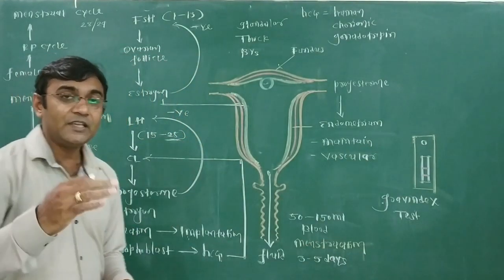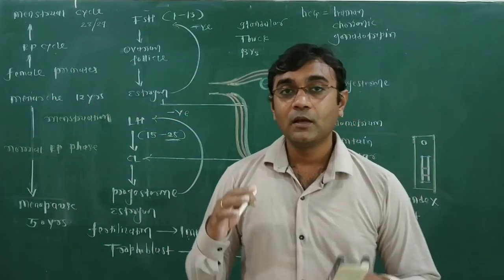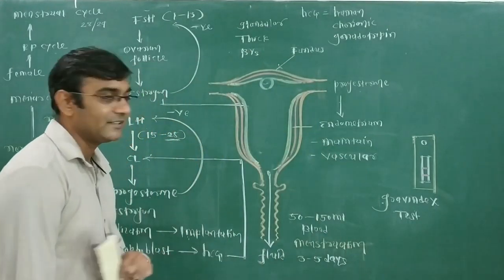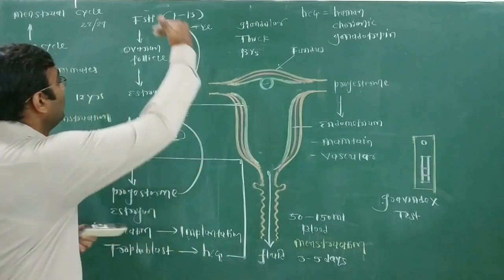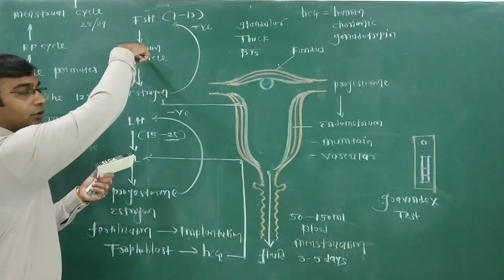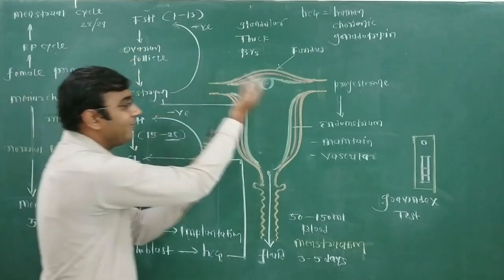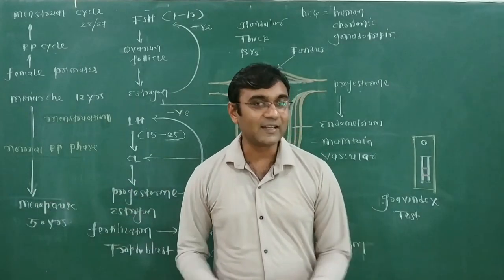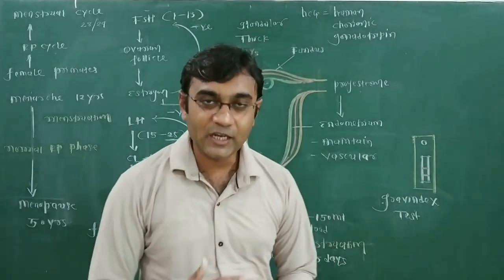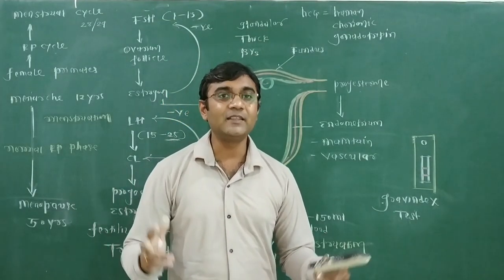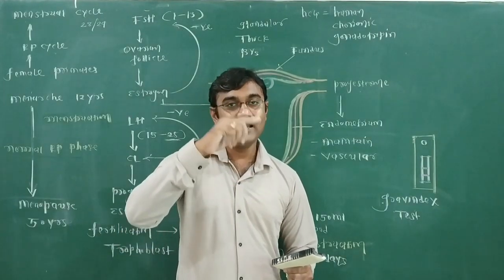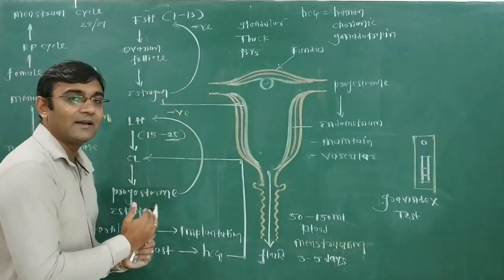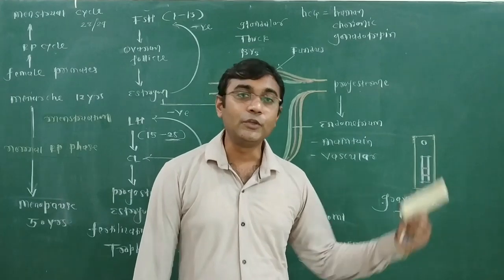Important question: which hormone in the female body indicates the test of pregnancy? The answer is HCG — human chorionic gonadotropin. Ovarian events and ovarian hormone levels affect uterine events.